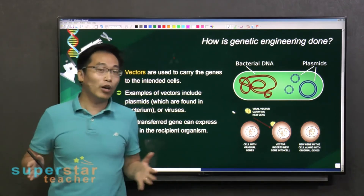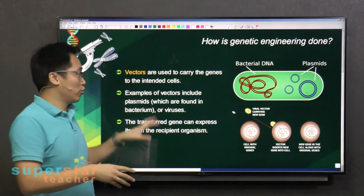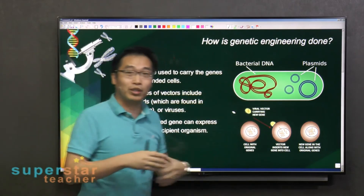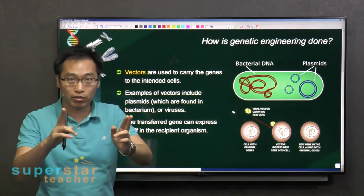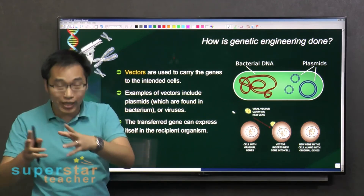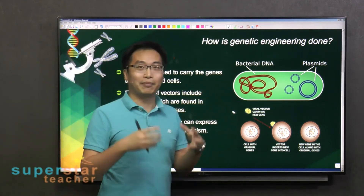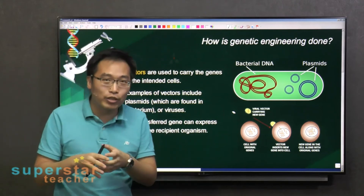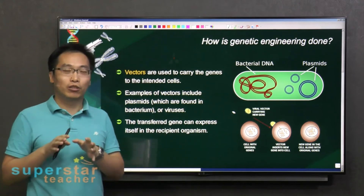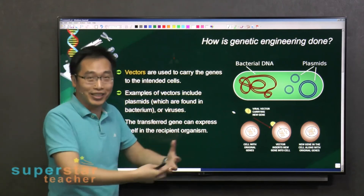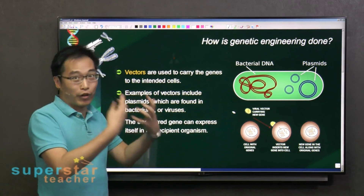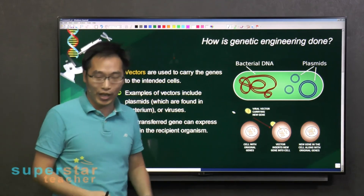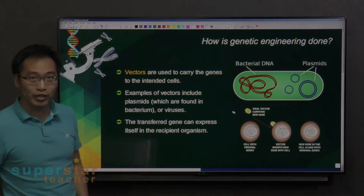There is another way of looking at it: you can also use vectors to introduce a gene that produces a protein which then cuts out the problematic part of the DNA. That approach is a little bit more involved, so people don't use it as often as simply replacing with a functional copy of the gene that produces a functional protein. So this is how genetic engineering is done.